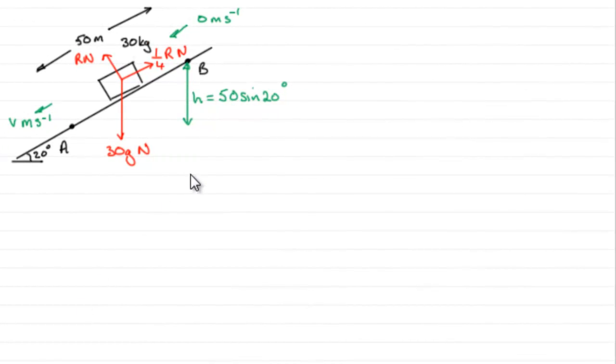Okay, so to do this last part, I've drawn a sketch of the diagram again. We're told that the particle is released from rest at B, and then it slides down the plane, and we've got to find out the speed as it passes through A.